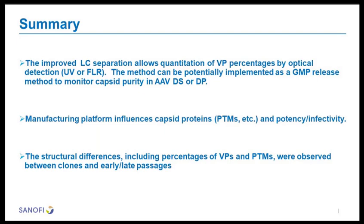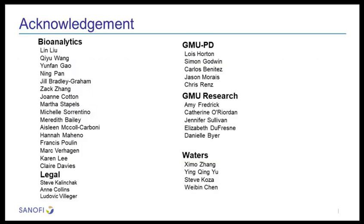In summary: improved LC separation allows quantitation of VP percentages by optical detection, and this method can potentially be implemented as a GMP release method to monitor capsid purity. The manufacturing platform influences capsid protein post-translational modifications and also affects potency or infectivity. We observed structural differences in VP percentages and PTMs between clones and early versus late passage. I would like to thank my team — Lin, Chi, Wim, Fan, Nien, Zhou — for generating the data, and thank our collaborators in process development and research, as well as our collaborators at Waters, especially Shimo, who helped us develop and improve the method. Thank you for your attention.